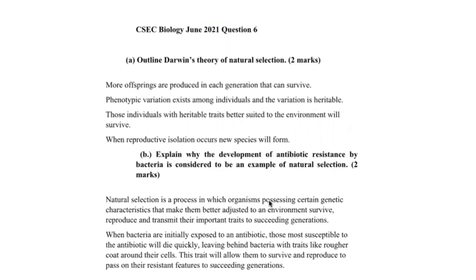Next question. Explain why the development of antibiotic resistance by bacteria is considered to be an example of natural selection. To understand this question, let me reiterate the definition for natural selection. This is a process in which organisms possessing certain genetic characteristics that make them better adjusted to the environment survive, reproduce, and transmit their important traits to succeeding generations.